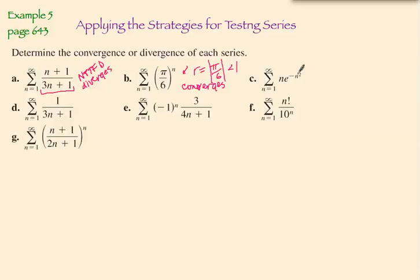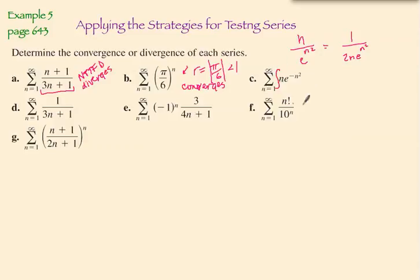Over here, you might think this n-th term is going to diverge, but notice this is really n over e to the n squared. Because it's infinity over infinity, you would apply L'Hôpital's rule and end up with 1 over 2n e to the n squared. Plugging in infinity makes this go to zero, so we can't use the n-th term test for divergence. It's not geometric, p-series, alternating, or telescoping. This looks like a great setup for the integral test — you have basically the du for e to the negative n squared, where u is negative n squared. You would discover it converges by the integral test.